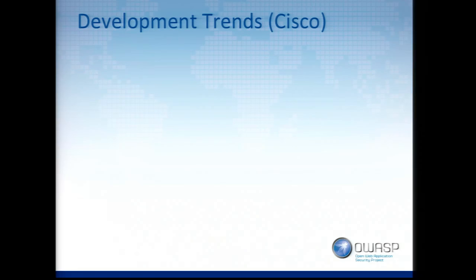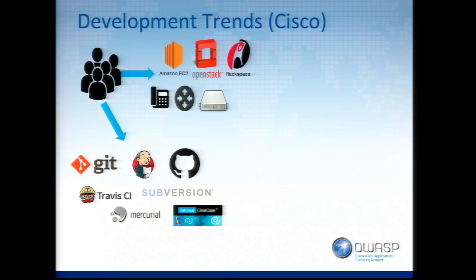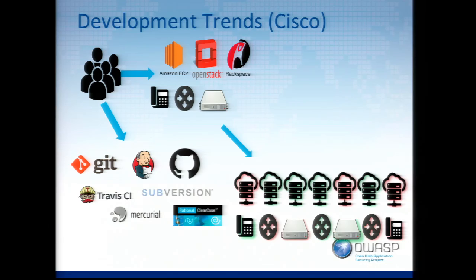Looking at development trends inside Cisco: it's historically been a waterfall model, moving more and more towards agile. This microcosm of Cisco replicates what's happening in the real world — a bunch of developers working in multiple business units using a variety of tool sets. We don't standardize on one tool; you can use Git or Subversion, Travis CI or Jenkins, Amazon EC2, OpenStack, Rackspace, or even embedded systems like an IP phone, router, or switch. We have to engineer our solution to adapt to this environment, and over time code releases could be vulnerable or not, and that changes rapidly with agile.